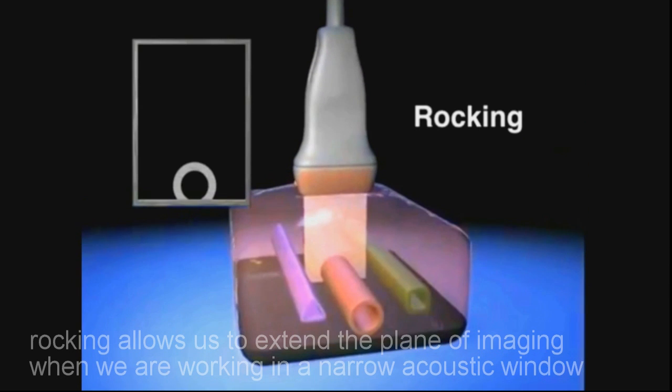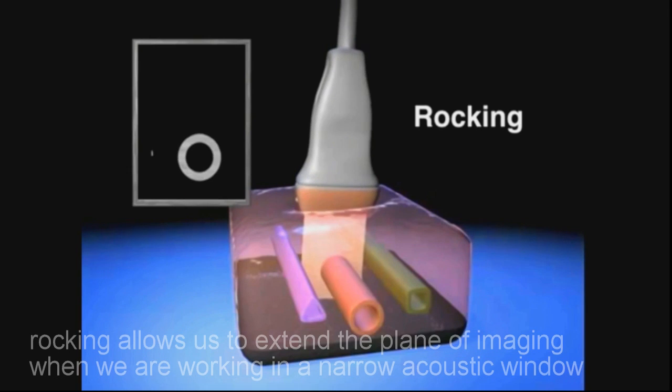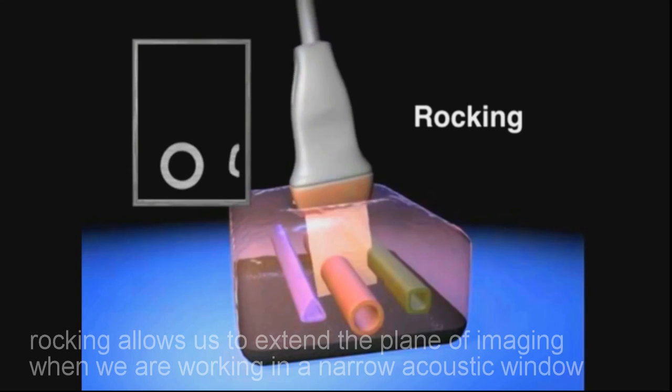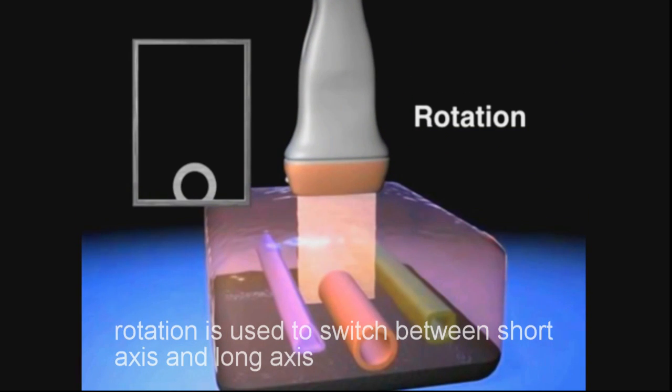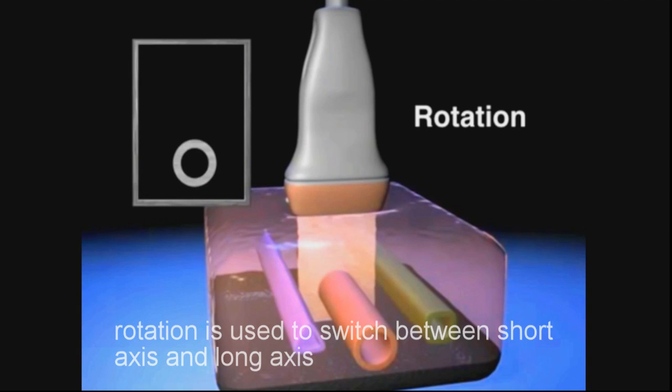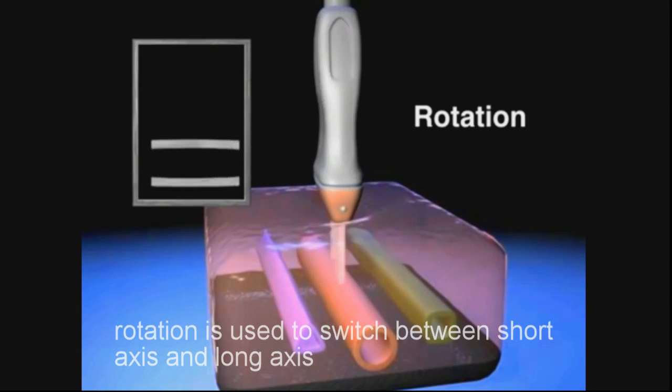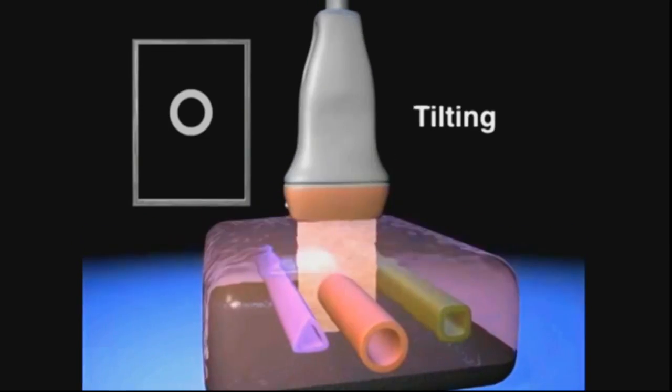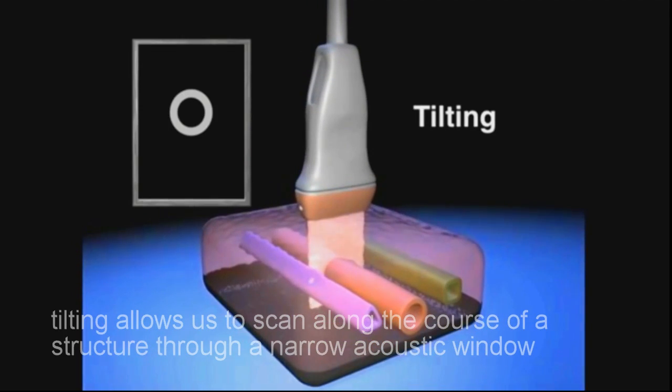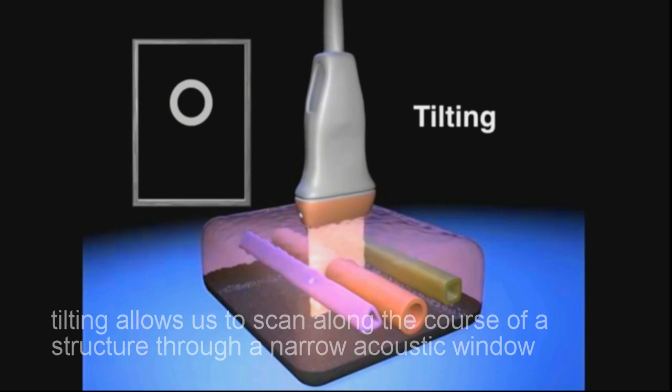Rocking allows us to extend the plane of imaging when we are working in a narrow acoustic window. Rotation is used to switch between short axis and long axis. Tilting allows us to scan along the course of a structure through a narrow acoustic window.